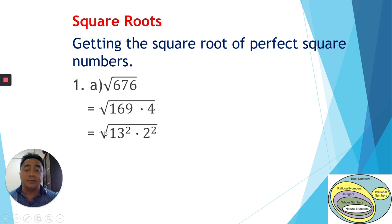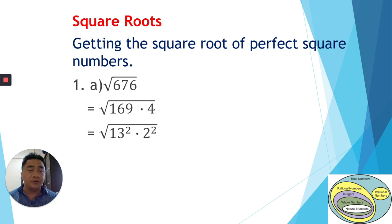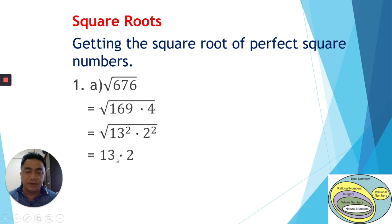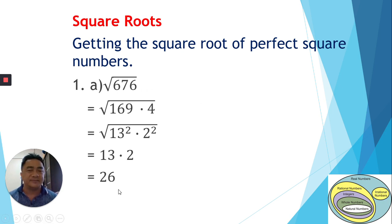The radical sign equals one-half as an exponent. Multiplying one-half by the power 2 gives 1, so 13² becomes 13 and 2² becomes 2 outside the radical sign. Therefore we have 13 times 2, which equals 26. So the square root of 676 is 26.